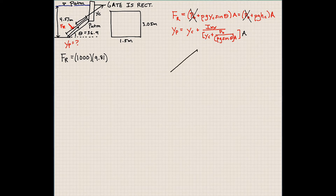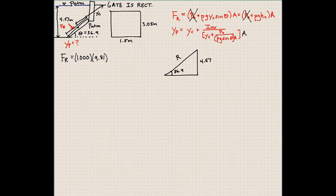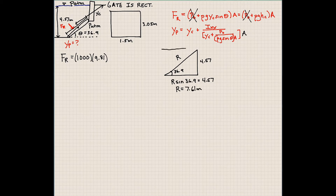Let's do some geometry. If we have a big triangle here, we know this angle is 36.9 degrees. That's our hypotenuse R. The big triangle has a height of 4.57 meters. We can solve for R: R times sine of 36.9 equals 4.57. Solving for R, we calculate R to be 7.61 meters. That's the whole distance from the surface of the water to the bottom of the dam.